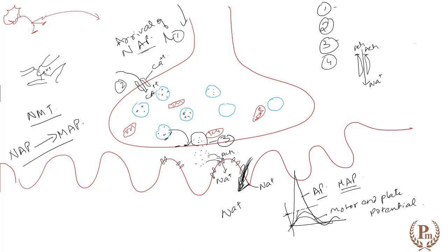One important thing: what is the fate of acetylcholine? Some acetylcholine will bind to the receptors; the rest will be hydrolyzed by the enzyme acetylcholinesterase, which breaks it into two components — acetate and choline. The choline is re-uptaken at the terminal end and used for the formation of new acetylcholine neurotransmitter.